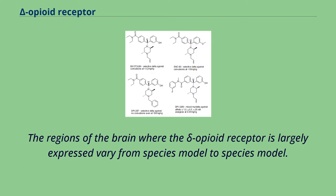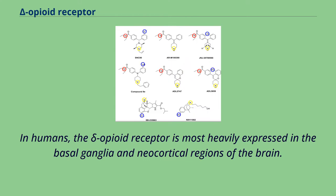The regions of the brain where the Delta Opioid Receptor is largely expressed vary from species model to species model. In humans, the Delta Opioid Receptor is most heavily expressed in the basal ganglia and neocortical regions of the brain.